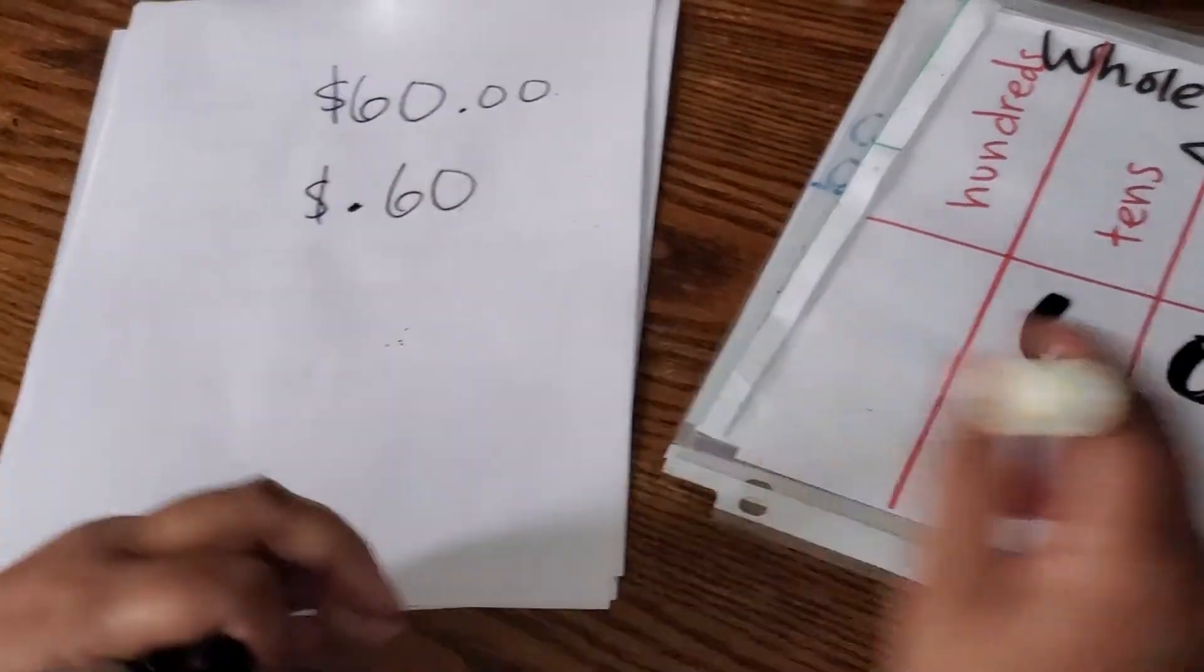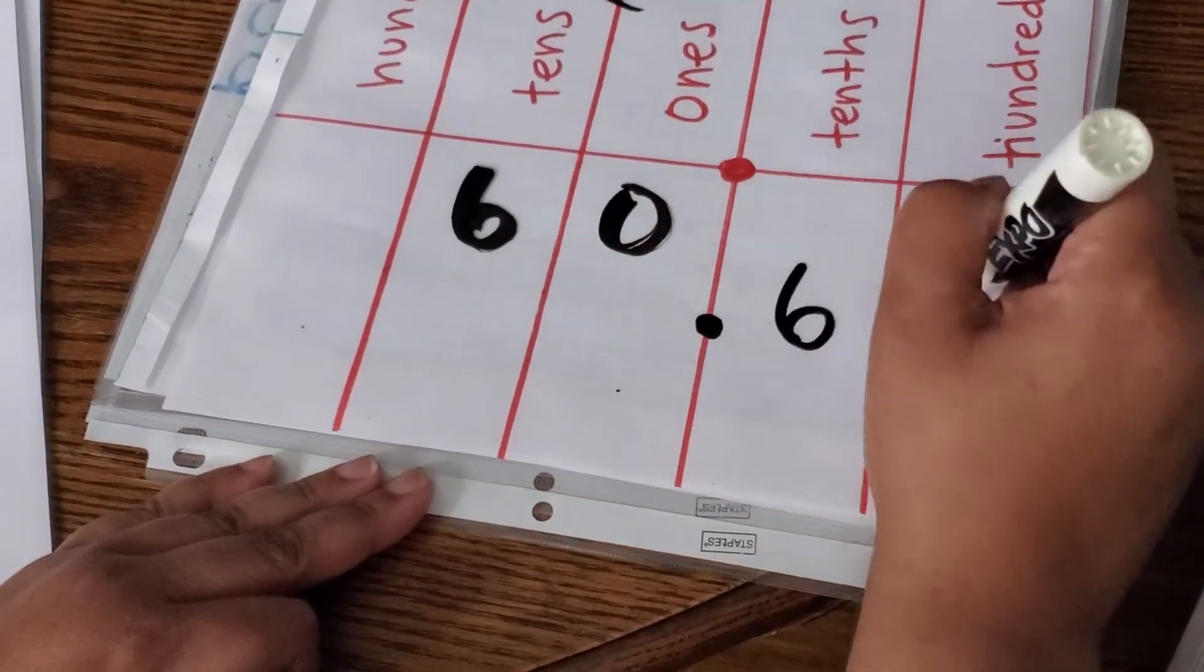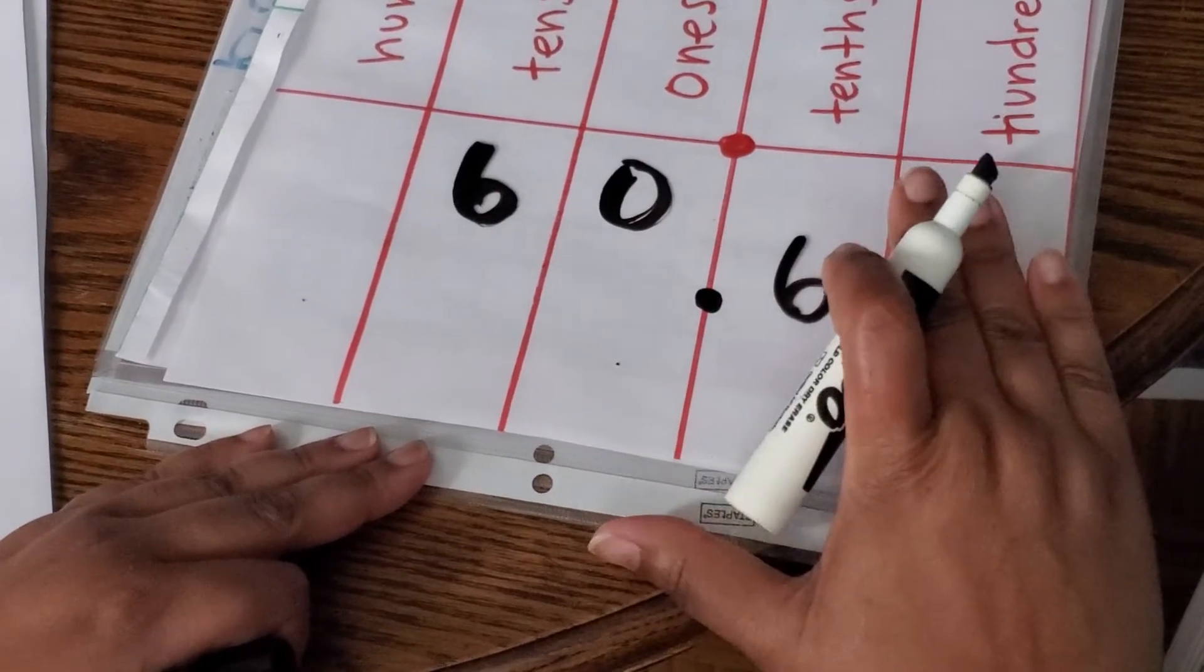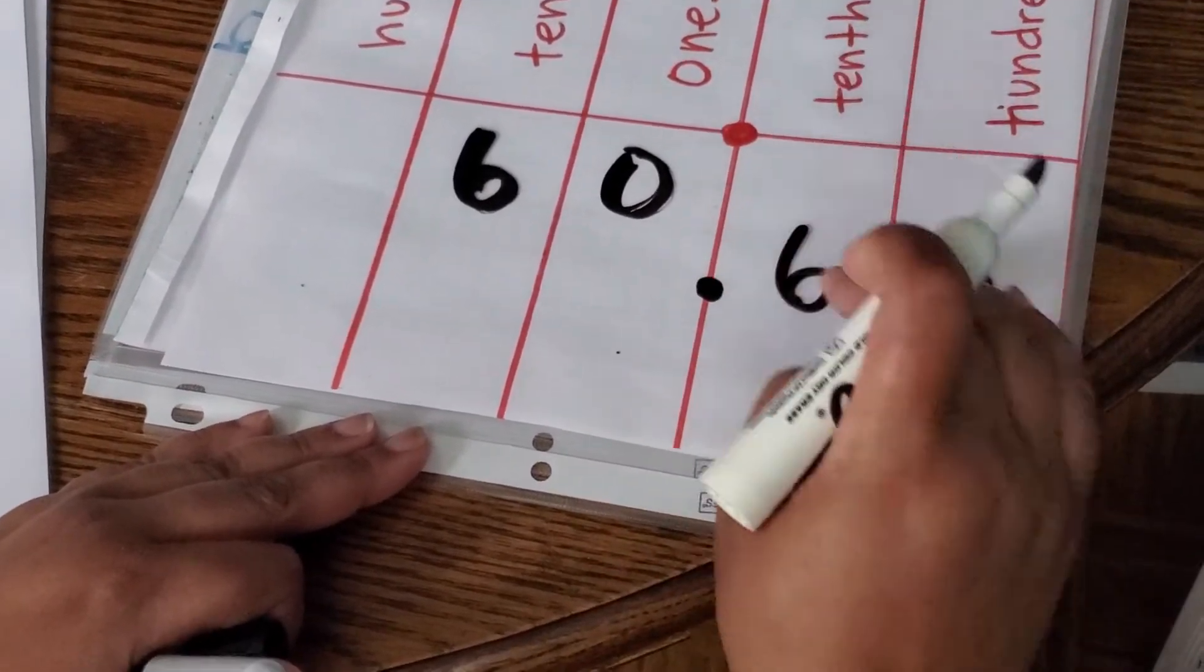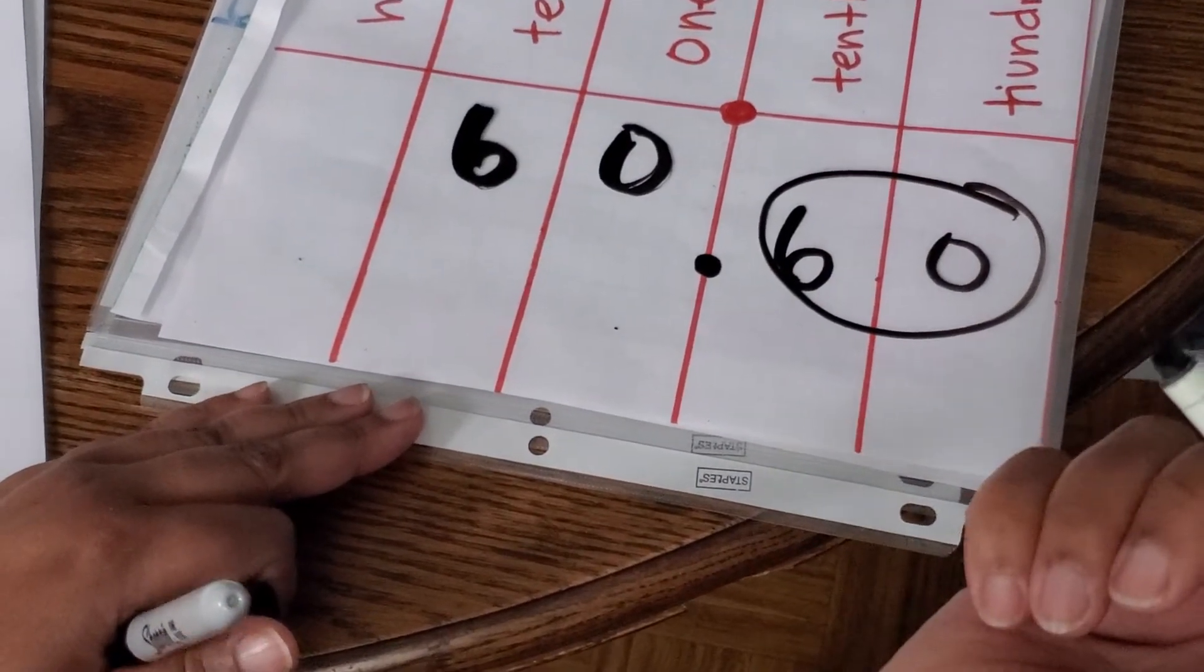But, point six zero, you got your point here. Six zero would be six. If you ignore the zero, you could say it was six tenths or you could say it was 60 hundredths. Either of those would be correct.